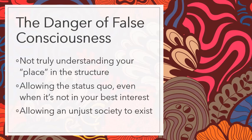False consciousness means not truly understanding where you fit into the structure. According to Marx, if you don't understand where you truly fit, you're more likely to allow the status quo to exist, even when it's not in your best interest. He asserted that if we live in a state of false consciousness, we allow an unjust society to exist — a very dangerous place for us to be. In contemporary American society, large numbers of people may live in this state of false consciousness, which further encourages alienation.